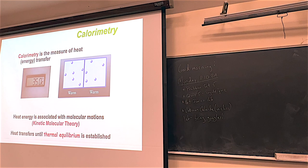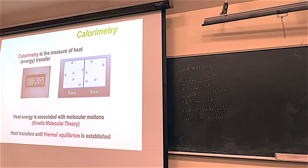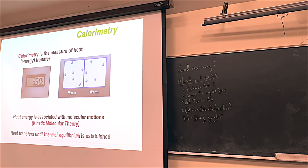In all examples ever studied, if you take something hot and place something cold with it, the hot and the cold go warm. There are no examples of the hot getting hotter and the cold getting colder - hot and cold always make warm. This is one of the big ideas of the kinetic molecular theory. Thermal equilibrium just means the hot and the cold have come together to make warm.